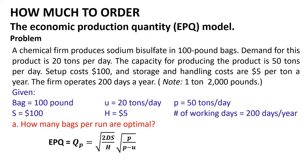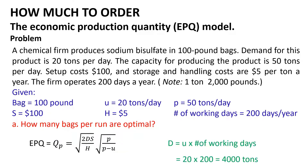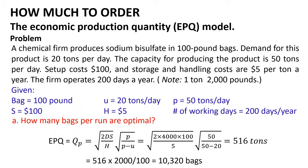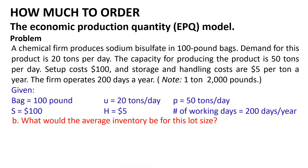The first question is to find the number of bags per run for optimal cost. The optimal run size EPQ equals Q_p = √(2 × D × S / H) × √(p / (p − u)). First, calculate annual demand D = u × working days = 20 × 200 = 4,000 tons. Substituting: Q_p = √(2 × 4,000 × 100 / 5) × √(50 / (50 − 20)) = 516 tons. To convert to bags: 516 × 2,000 / 100 = 10,320 bags.